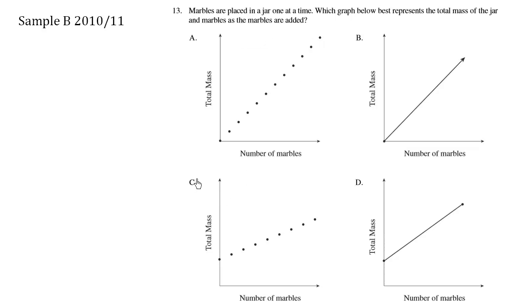The answer is C. When there are no marbles, the jar still has mass, so the graph must start above zero. It can't start at zero, so choices A and B are incorrect.